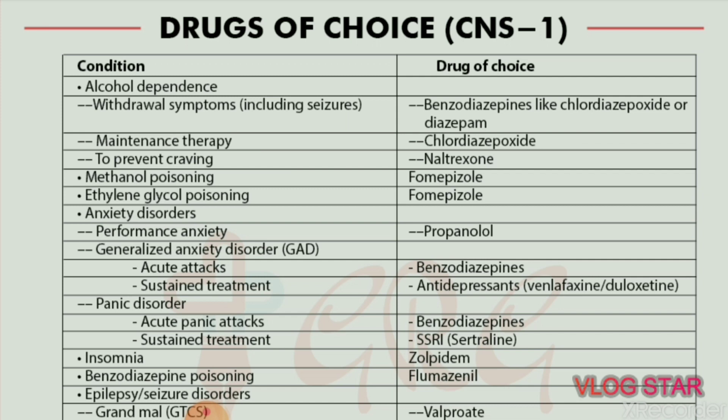Panic disorder — for acute panic attacks, drug of choice is benzodiazepines. For sustained treatment, the drug of choice is SSRI, specifically sertraline. Insomnia — drug of choice is zolpidem.